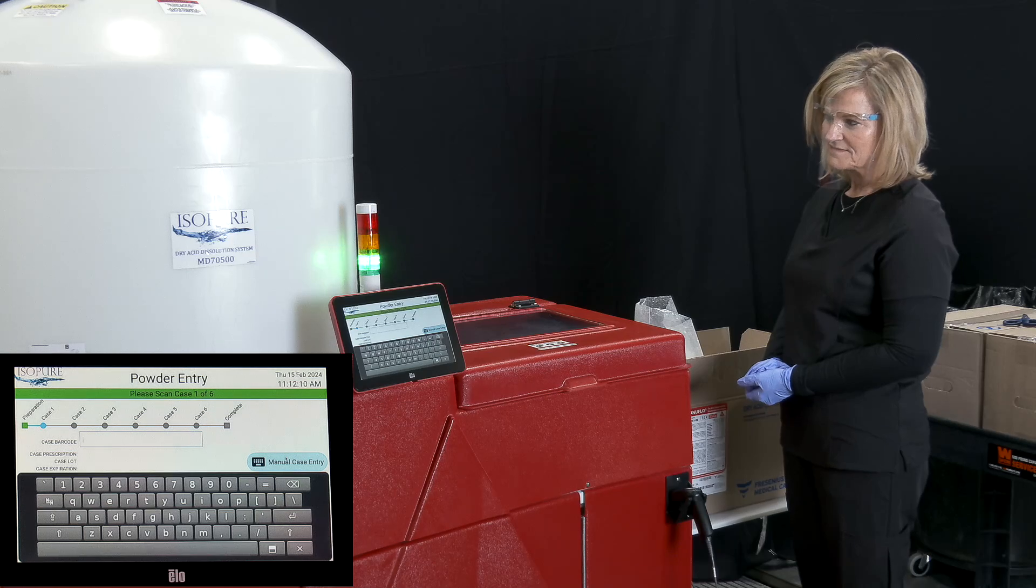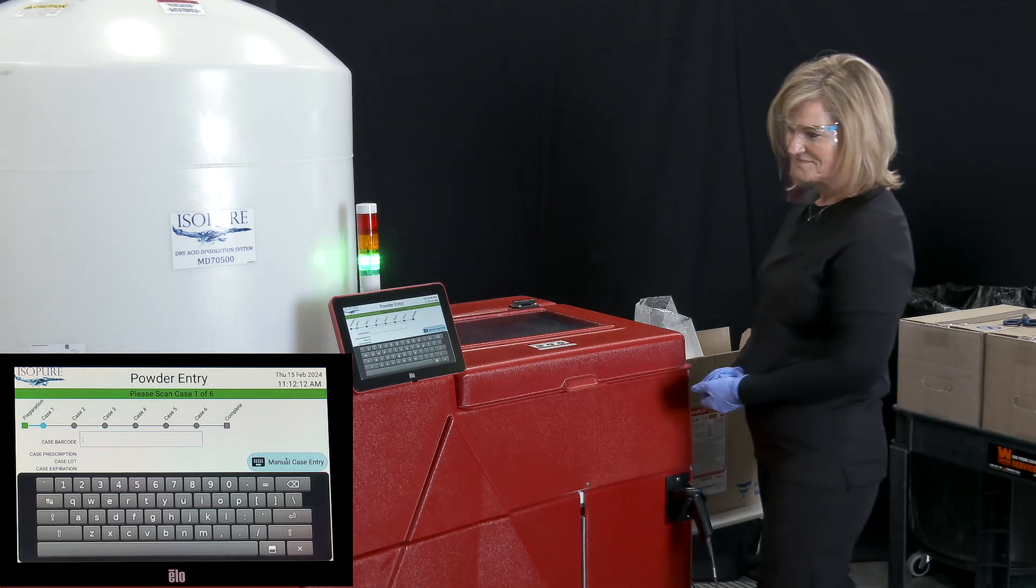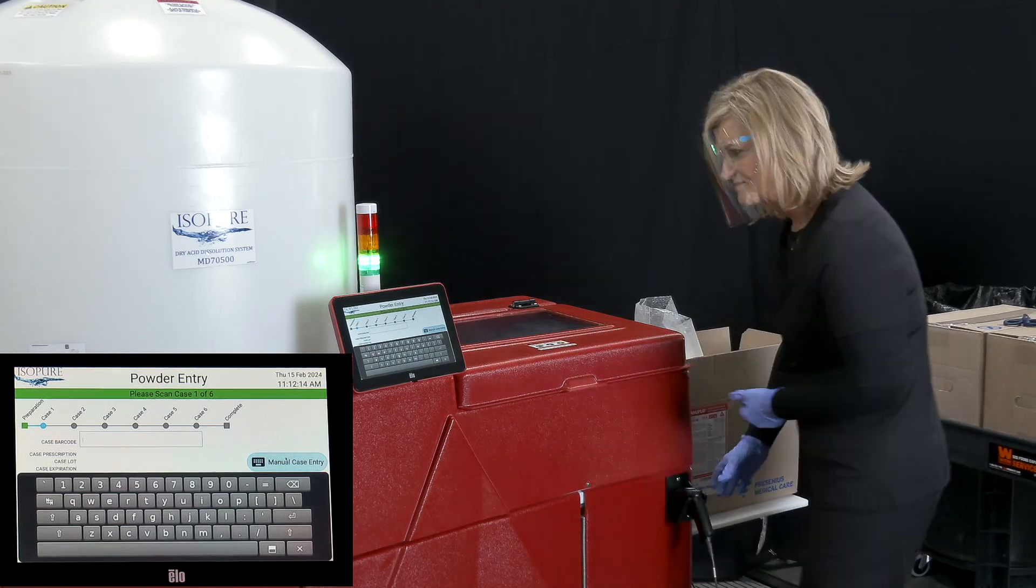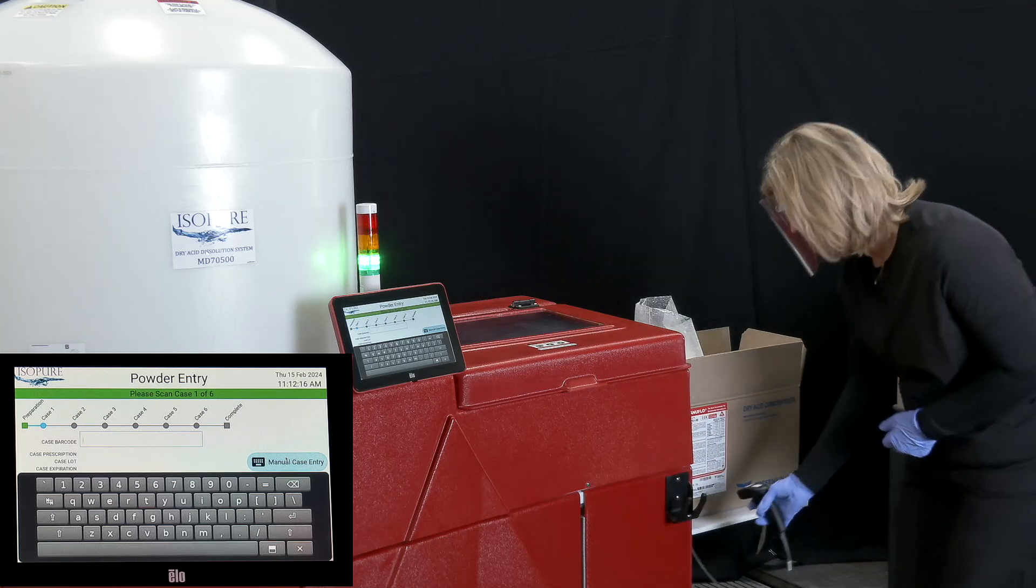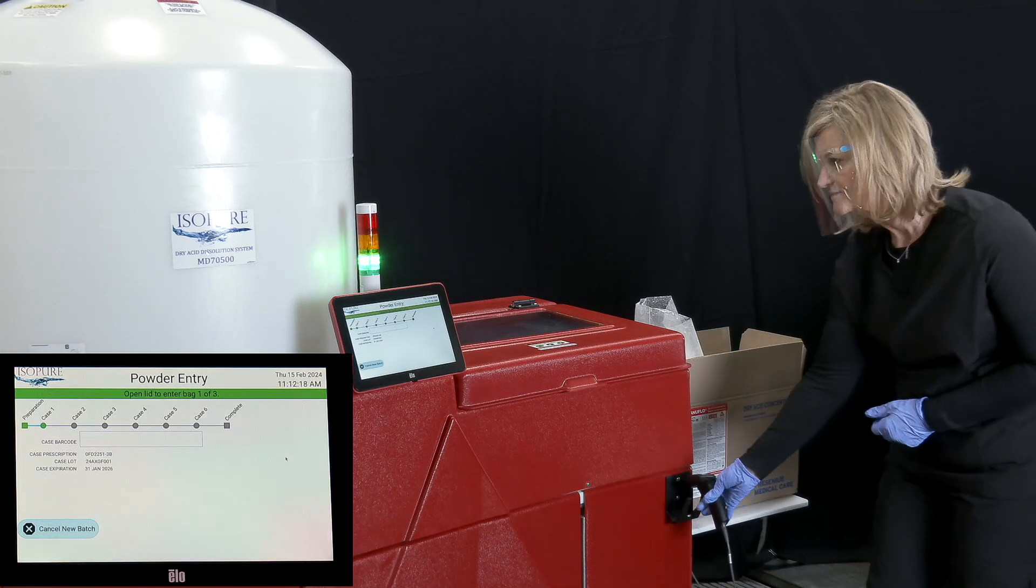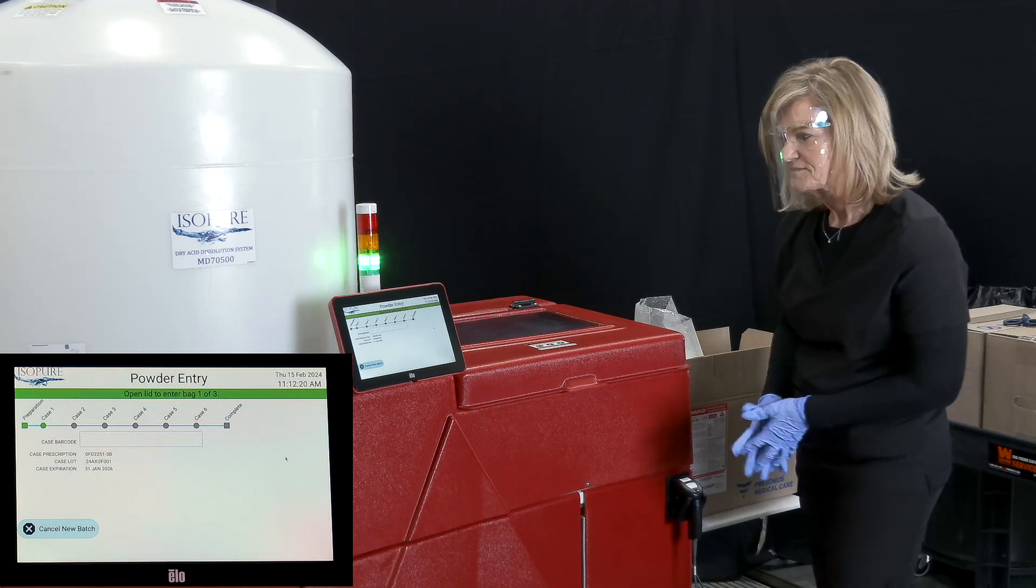To begin, place two cases on the shelf with labels facing out so that you can scan them. Use the barcode scanner to scan the QR code on the first case of dry acid concentrate.